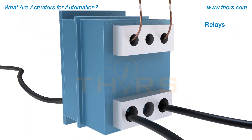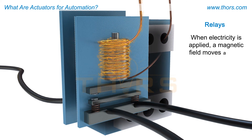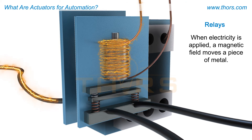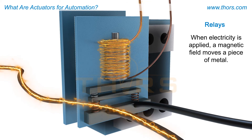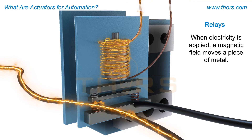Relays are similar to solenoids. When electricity is applied, a magnetic field moves a piece of metal. In this case, the metal acts as a switch that opens and closes another electrical circuit, usually one with high voltage or current, such as a large motor or an electric heating element.